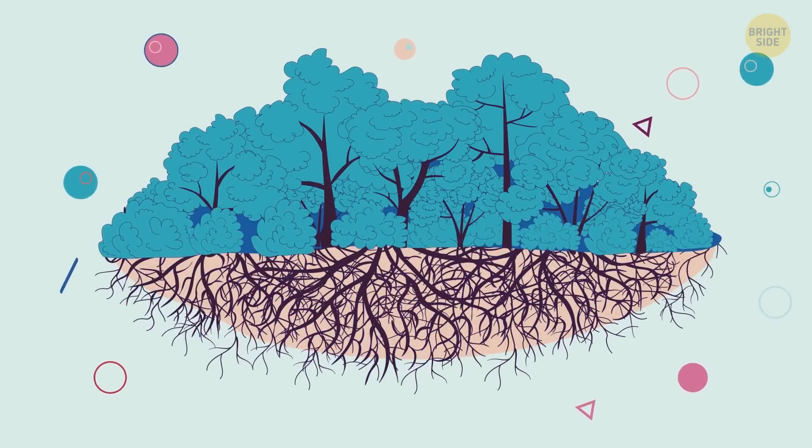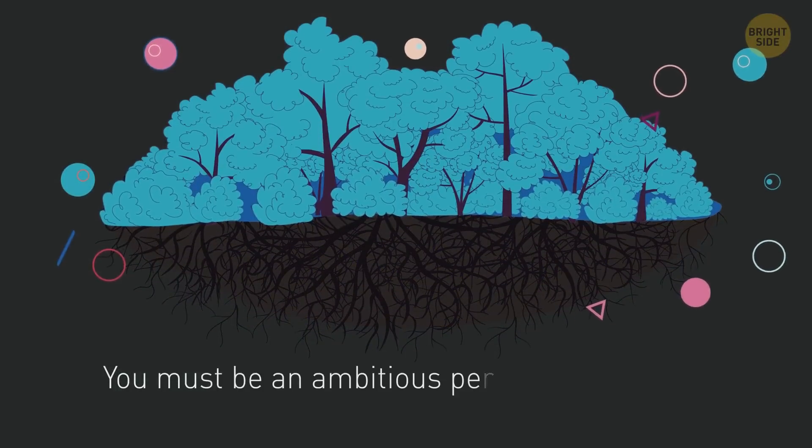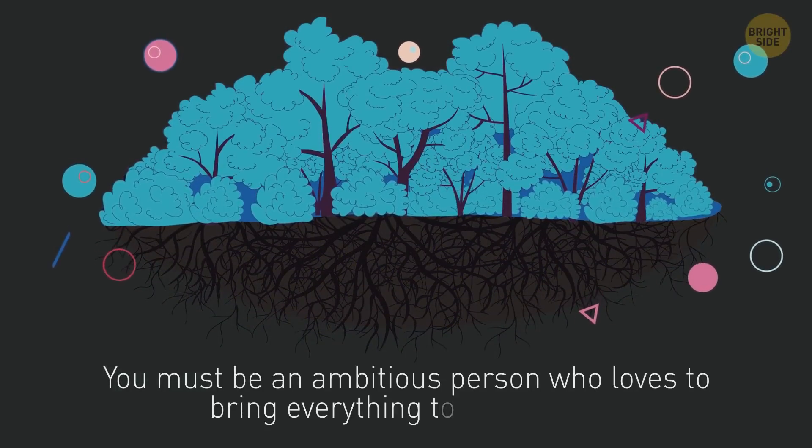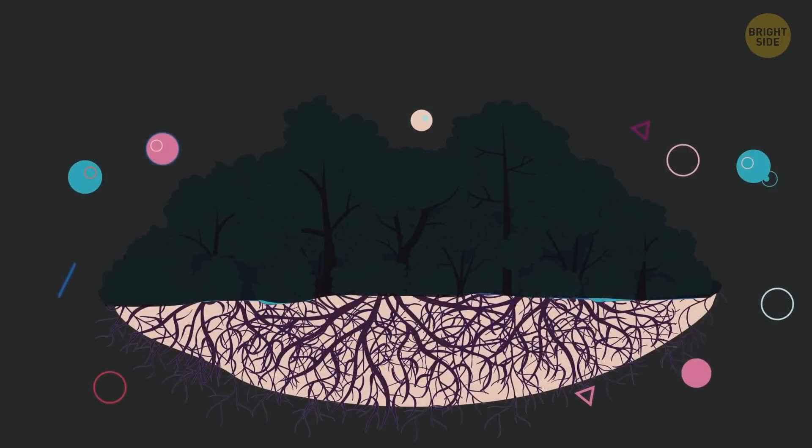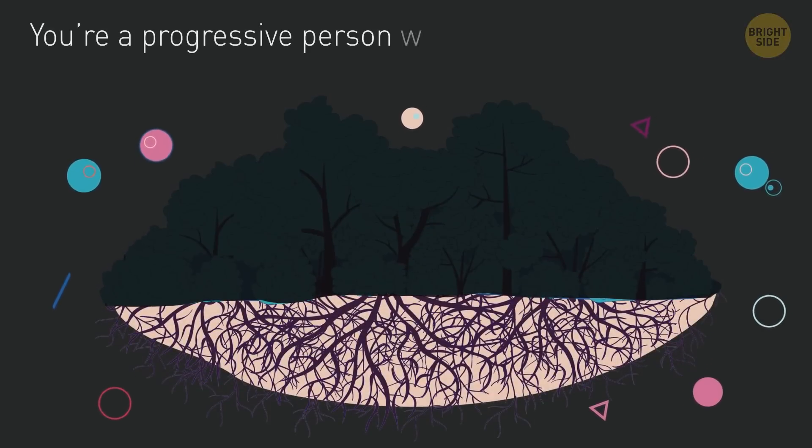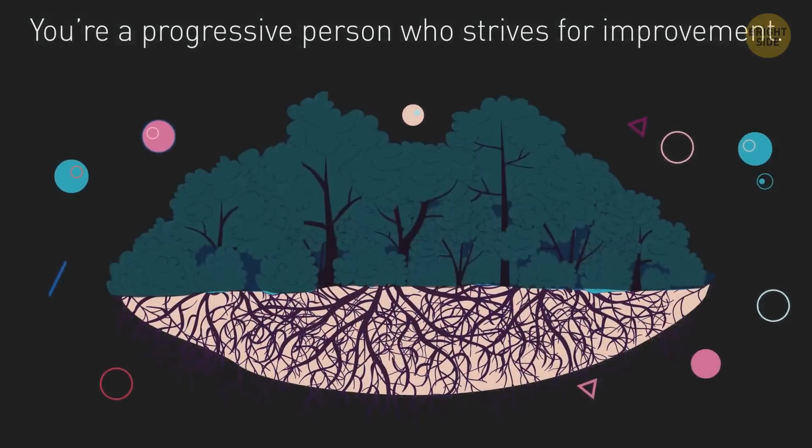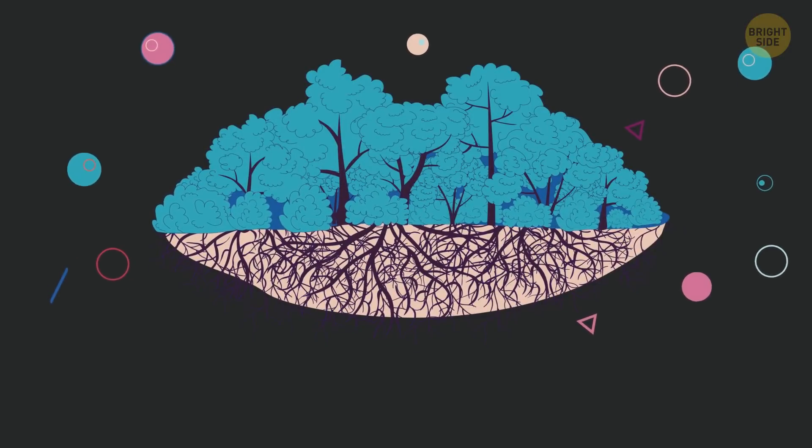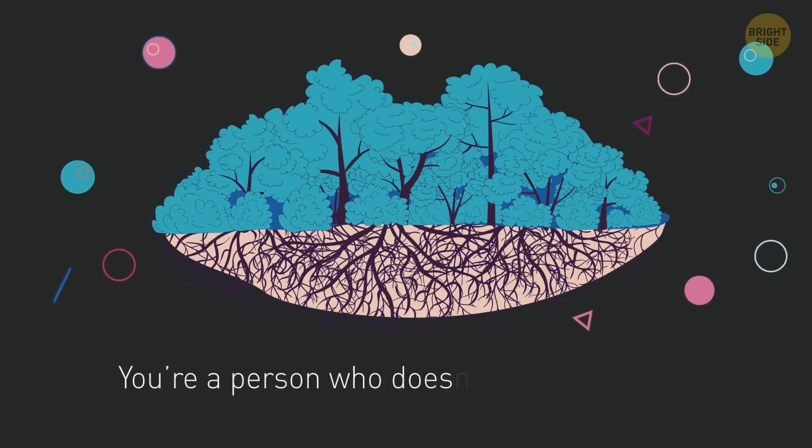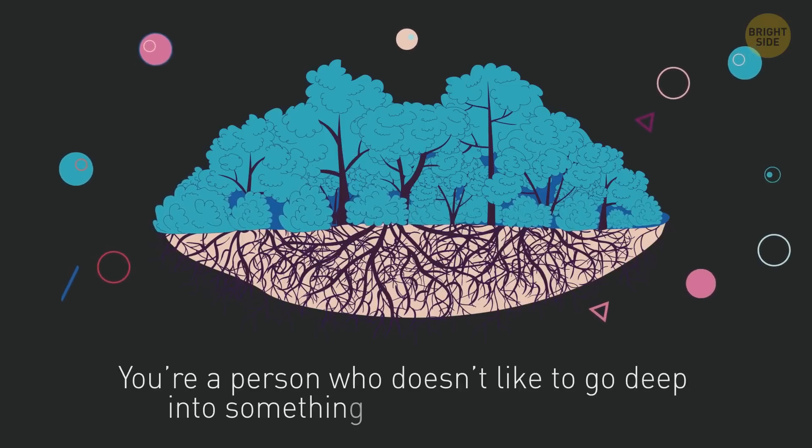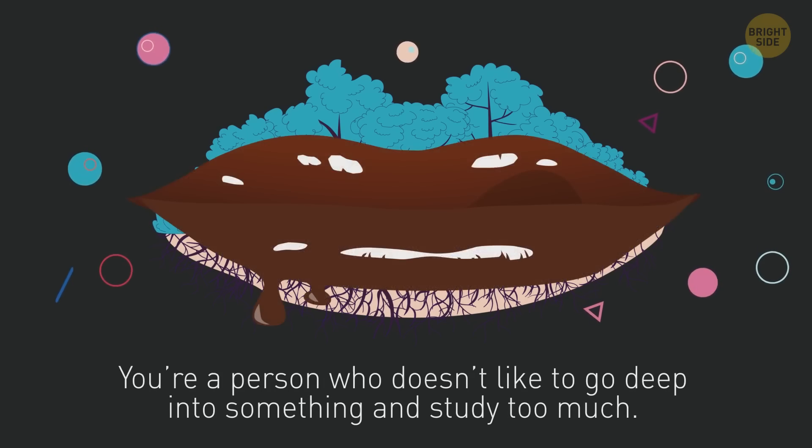Now, if you see trees here, you must be an ambitious person who loves to bring everything to perfection. If you saw the roots at the first moment, it means you're a progressive person who strives for improvement. If the whole picture looked like dark lips to you, then you're a person who doesn't like to go deep into something and study too much. Hey, where are those chocolate lips?